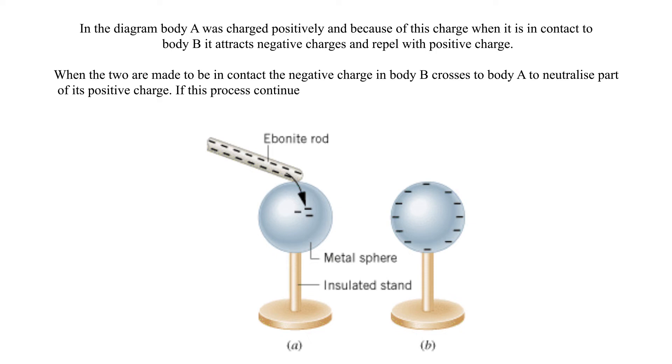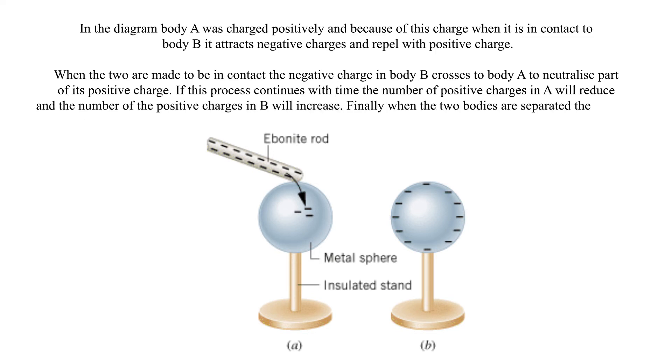If this process continues with time, the number of positive charges in A will reduce and the number of positive charges in B will increase. Finally when the two bodies are separated, the positive charges in B will distribute uniformly.